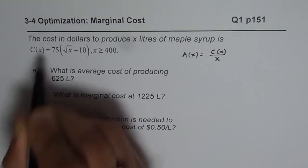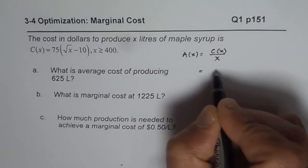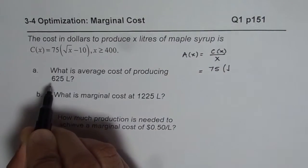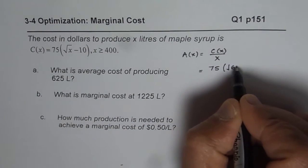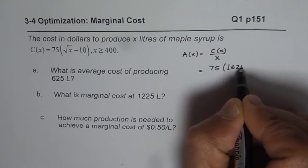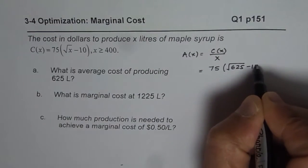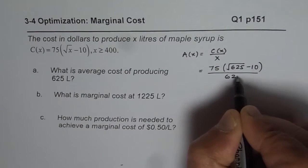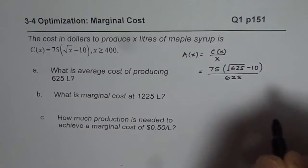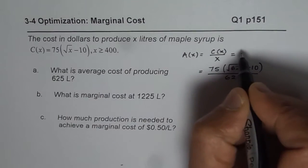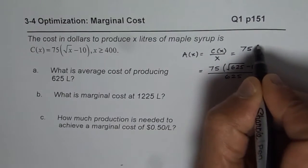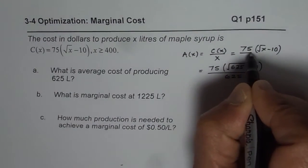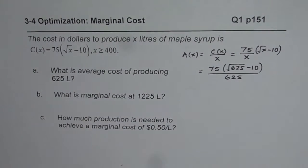The cost of production is given to us, so let us substitute: the formula is 75 times the square root of (x minus 10) divided by x. We substitute x equals 625 liters into this formula to get the average cost.